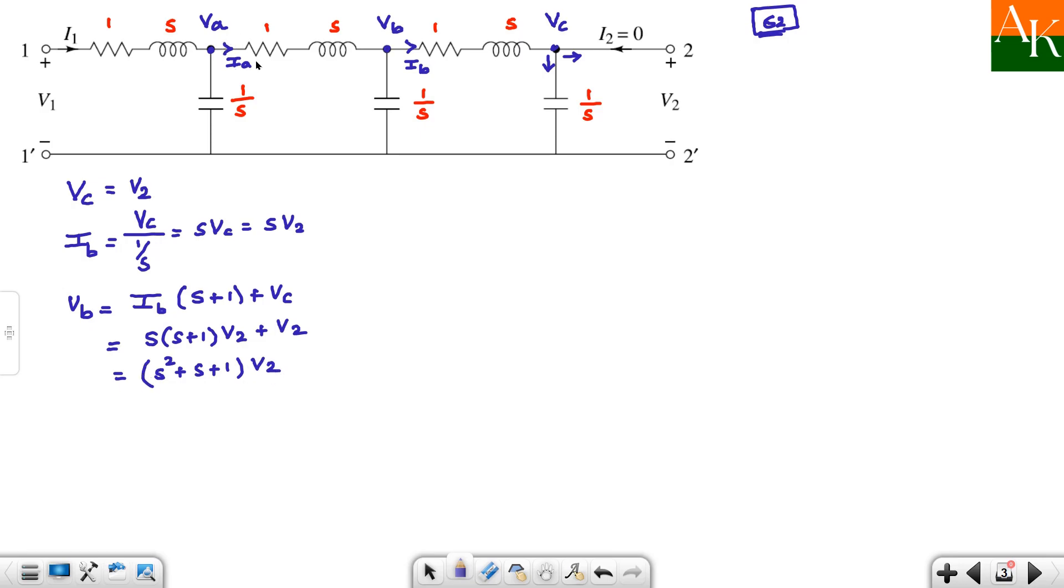Next you have to write down about this current, that is ia. Ia arrives at this junction and it will get splitted into two parts. So ia is vb by 1 by s, that is the downward current, plus the rightward current which is ib. This is nothing but s times vb plus ib. Now substitute vb and ib. So vb is (s² + s + 1), so here comes (s³ + s² + s) into v2, and ib is s times v2. Solving this becomes (s³ + s² + 2s) into v2. So we have found ia.